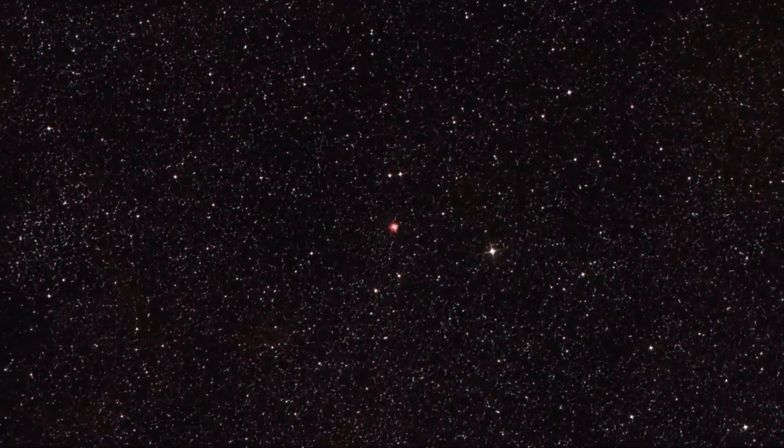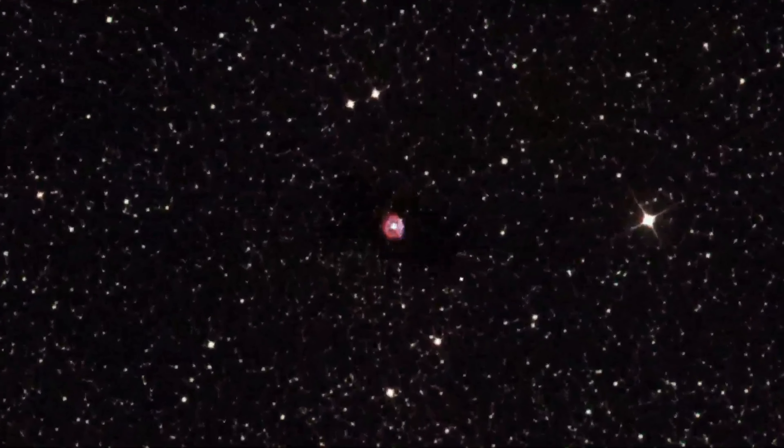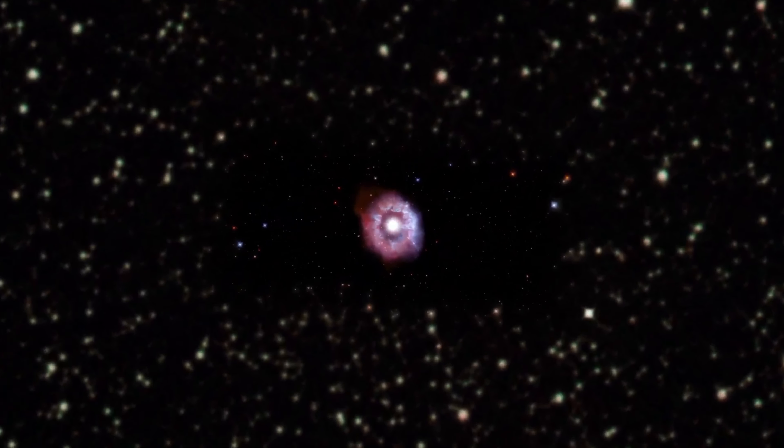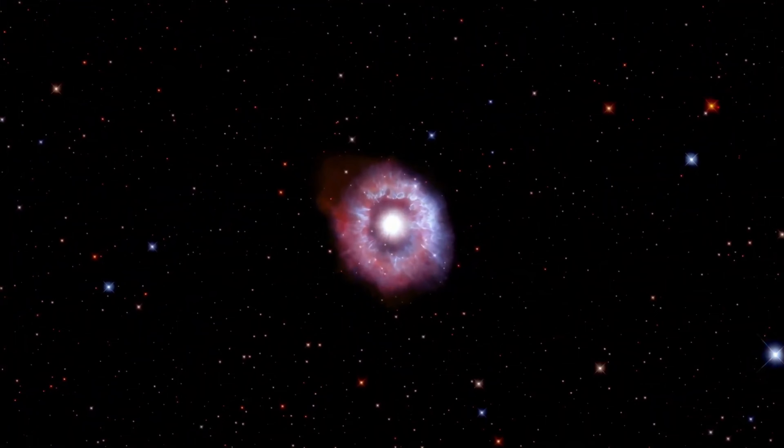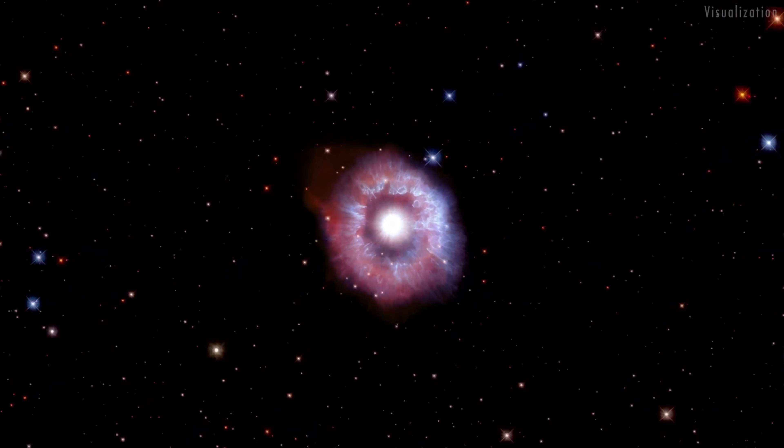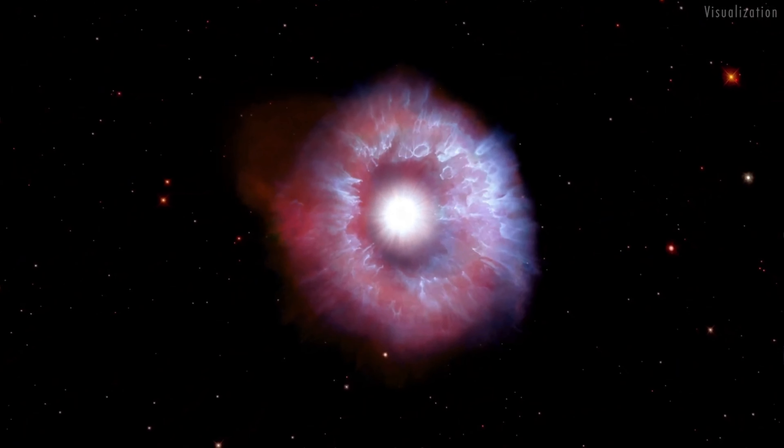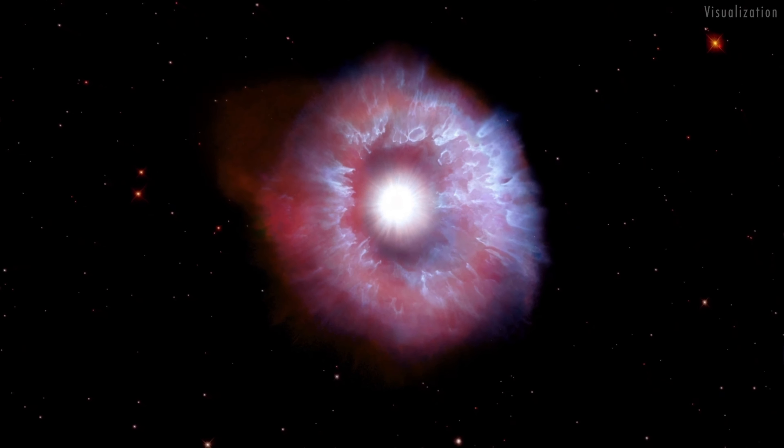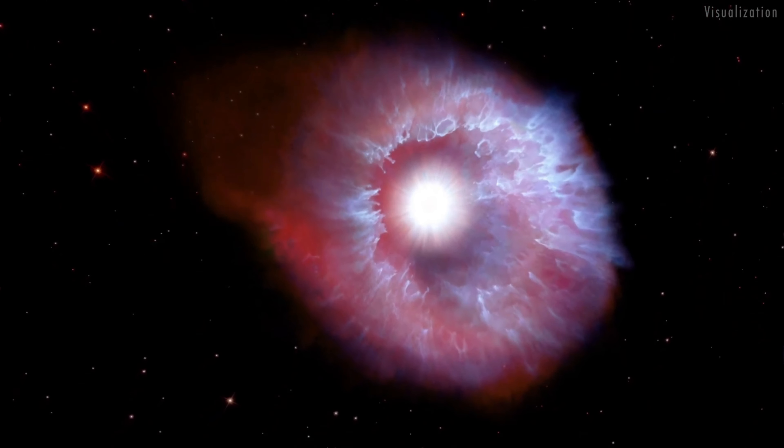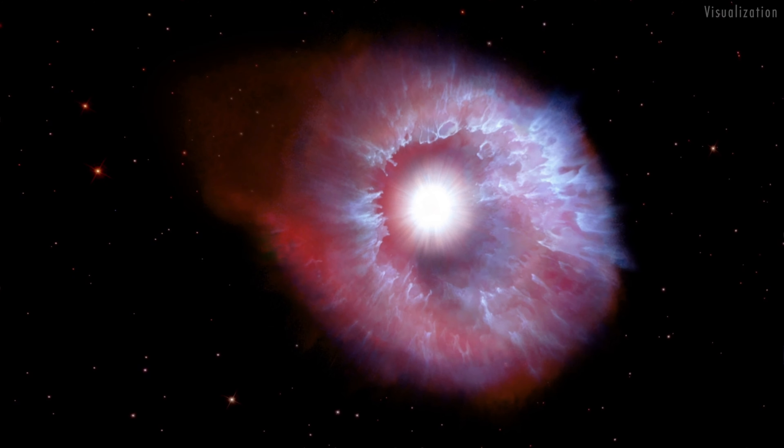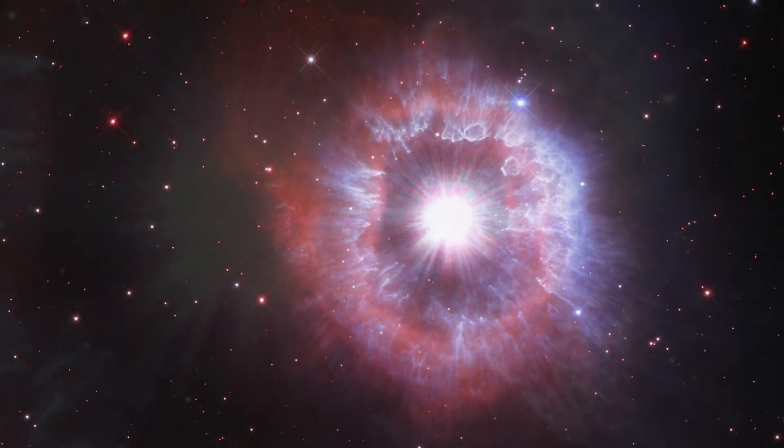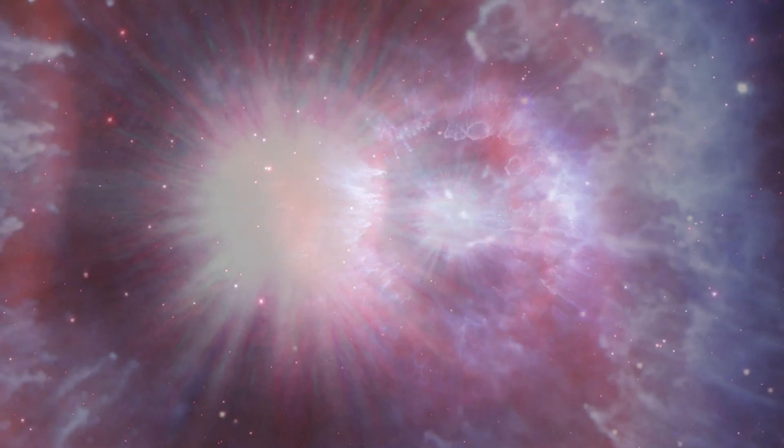This illustration of the newly forming exoplanet PDS-70b shows how material may be falling onto the giant world as it builds up mass. By employing Hubble's ultraviolet light sensitivity, researchers got a unique look at radiation from extremely hot gas falling onto the planet, allowing them to directly measure the planet's mass growth rate for the first time.